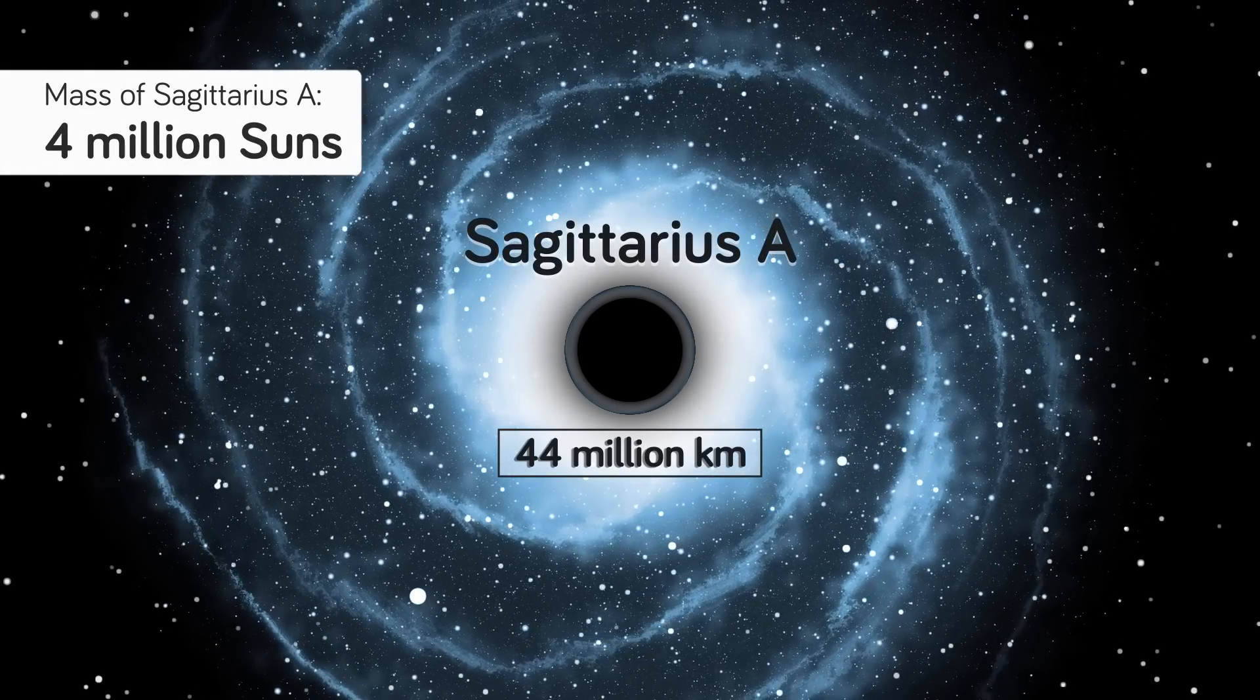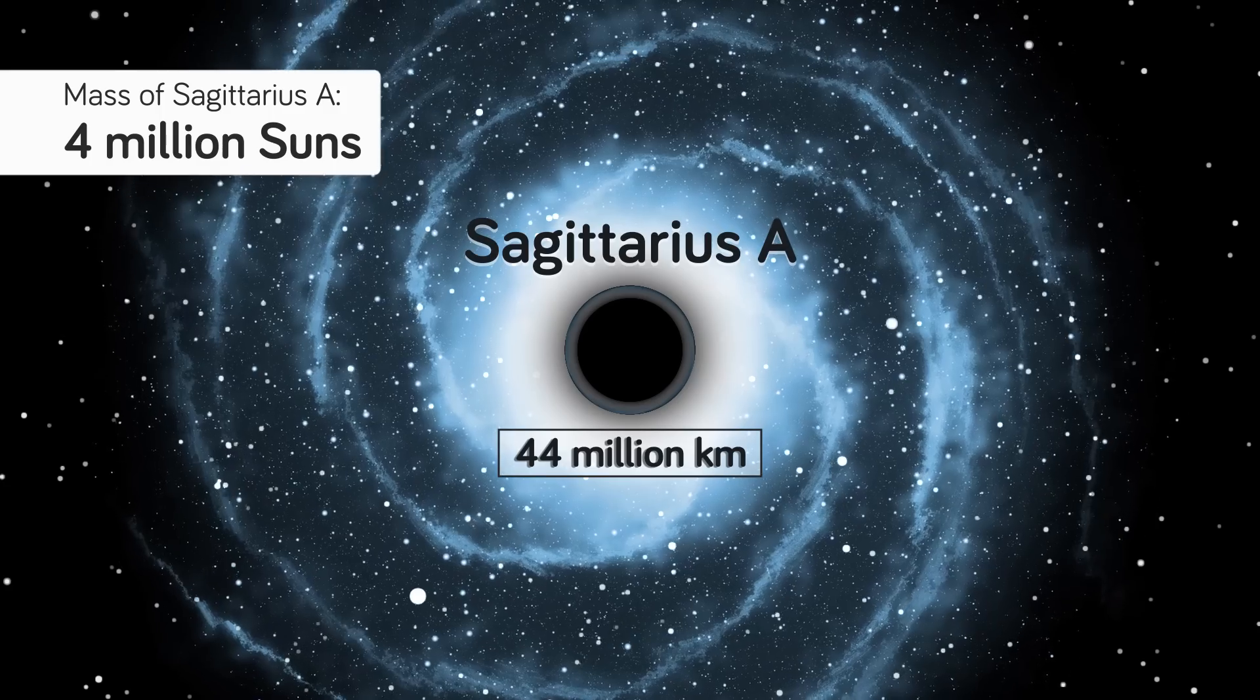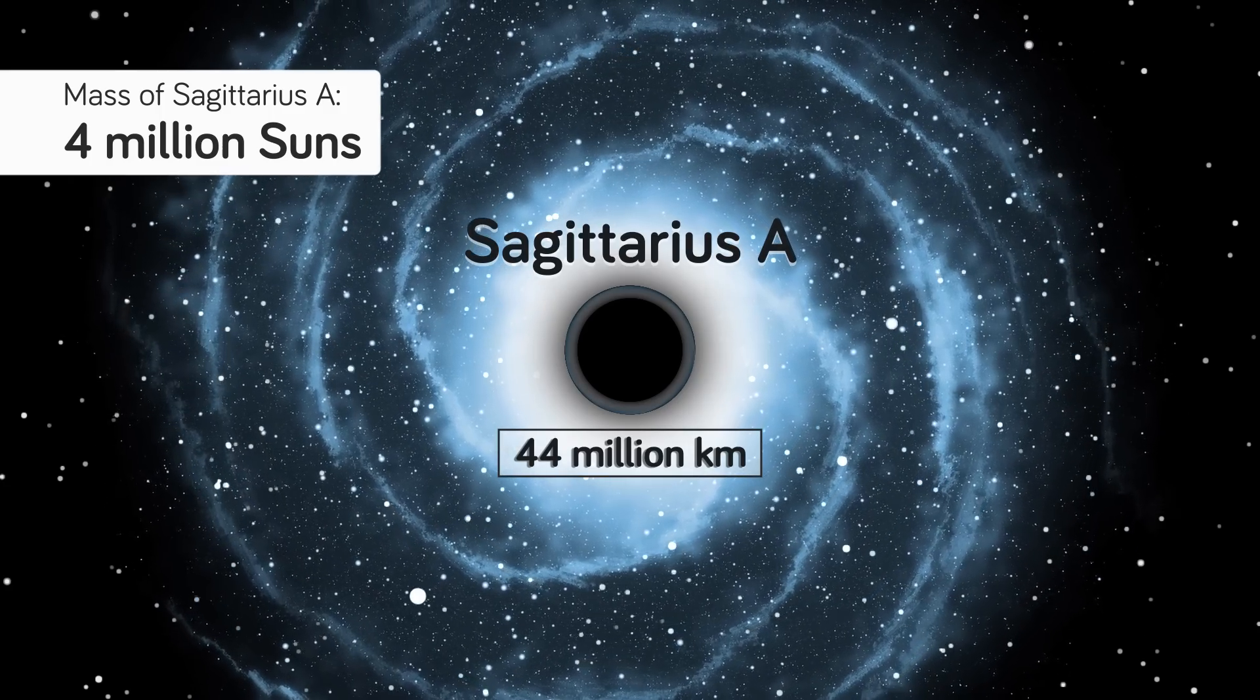Known as Sagittarius A, this black hole has a mass of more than 4 million of our suns, and has held our entire galaxy in its tight grip for untold eons.